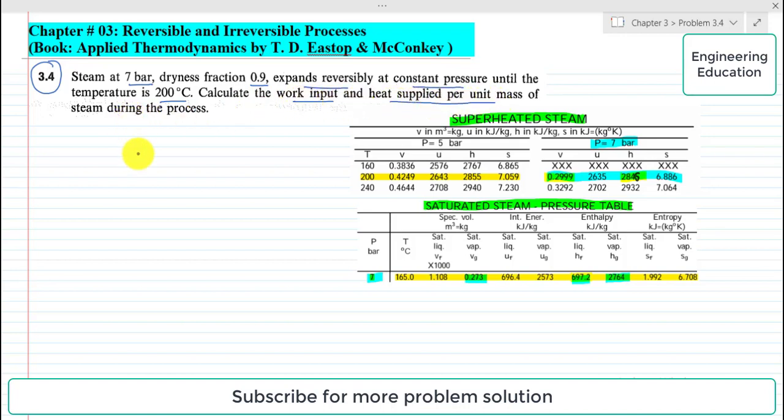So first of all, I will write the given data. The pressure is given as 7 bar. Dryness fraction, represented by small x, is 0.9. Temperature T2 after expansion is 200 degrees Celsius.